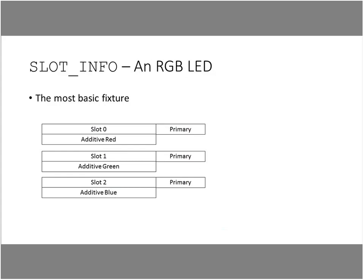Here's an example of the simplest slot info: a simple RGB LED fixture. It uses three slots of information, each an 8-bit value. Slot zero is declared as a primary for additive red. Slot one is a primary for green. Slot two is a primary for blue. That describes the entire fixture in just 15 bytes.